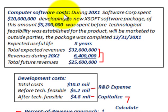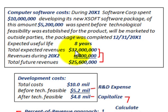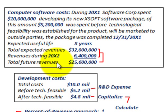Let's look at our example — computer software costs and revenues. During 20X1, a software corporation spent $10 million to develop its new Xsoft software package. Of this amount, $5,200,000 was spent before technological feasibility was established for the product, and it will be marketed to outside parties. The package was completed on 12-31-20X1, with an expected useful life of eight years and total expected revenues estimated at $32 million. For 20X2, revenues during that year were $6,400,000, leaving additional future revenues of $25,600,000.